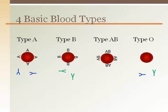There are four basic blood types: A, B, AB, and O. Each blood type is named for the marker or antigen that is on the surface of the red blood cell. There are two types of antigens, A or B.